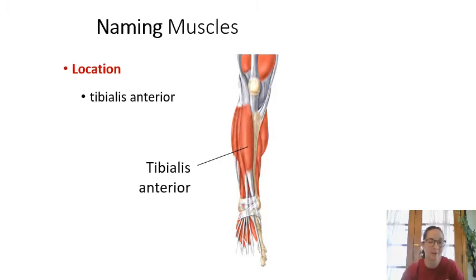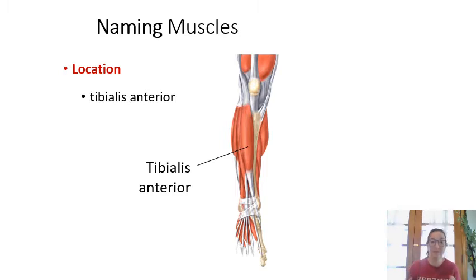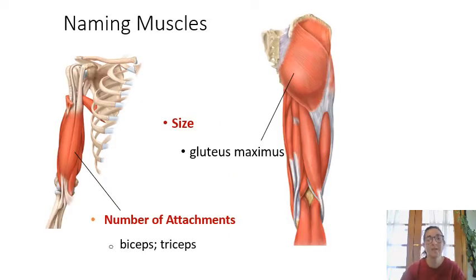Let's talk about how we name muscles. Looking at the anterior surface of the leg, you can see tibialis anterior — a muscle located on the anterior aspect of the tibia. A lot of times we name muscles based on location. Sometimes we name muscles for the number of attachments: biceps has two origination tendons, so bi means two; triceps has three muscle bellies, tri for three.